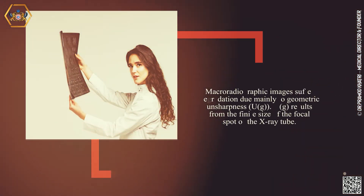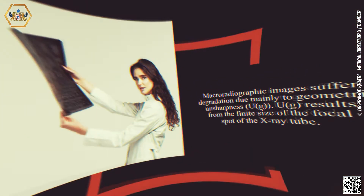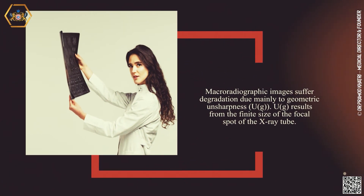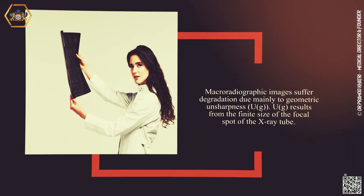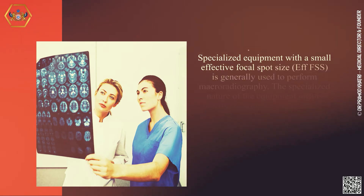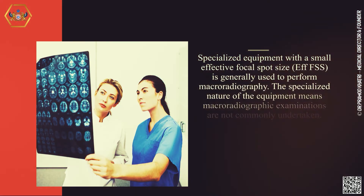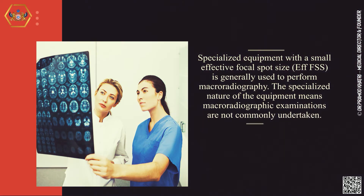Macroradiographic images suffer degradation due mainly to geometric unsharpness. UG results from the finite size of the focal spot of the X-ray tube. Specialized equipment with a small effective focal spot size is generally used to perform macro radiography.